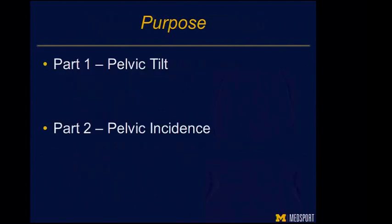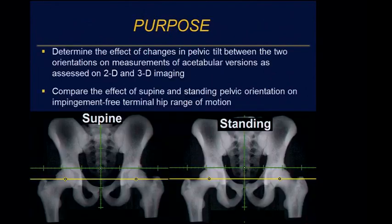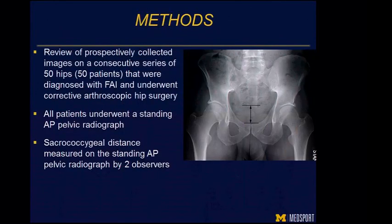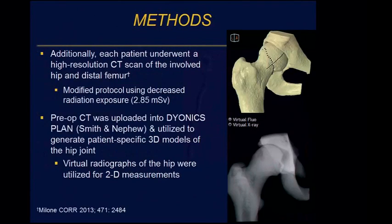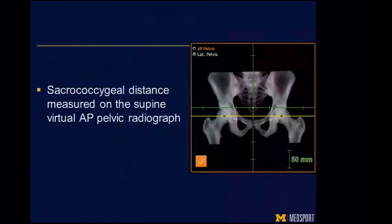This is a two-part study. We initially looked at pelvic tilt, and then the results of that study led us to pelvic incidence. We initially set out to determine how changes in pelvic tilt between standing and supine affect acetabular version, as well as impingement motion in a dynamic model. We reviewed 50 consecutive FAI patients, all with standing radiographs, as well as a low-dose CT scan analyzed with the Dionics plane software. We measured our sacrococcygeal distance as our initial proxy for pelvic tilt.